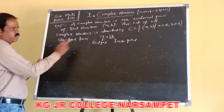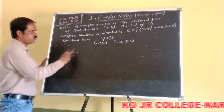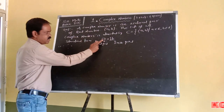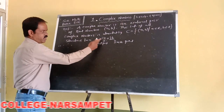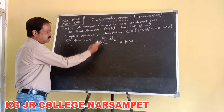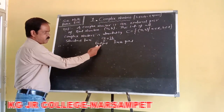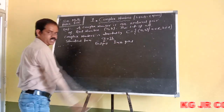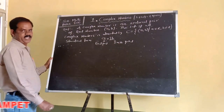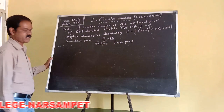What is the standard form of the complex number? a + ib. Where small a is called the real part, and ib is called the imaginary part.